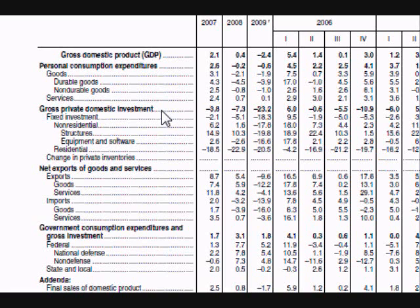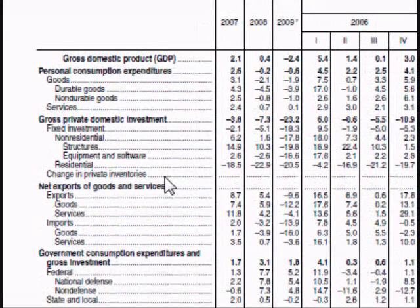The next main category, gross private domestic investment, is investments from businesses. If the economy is doing well, businesses will spend more to invest and expand; if the economy is doing poorly, companies tend to spend less on investments. This section is broken down into two subsections: fixed investment and the change in private inventories. Fixed investment has two parts — residential and non-residential. Residential investment is the construction of homes and apartment buildings. Non-residential investment is investment in things like new office buildings, warehouses, tools, and equipment, broken further into structural investment and equipment and software.